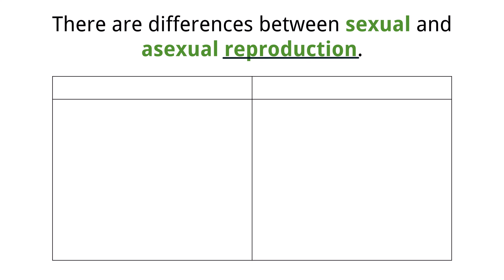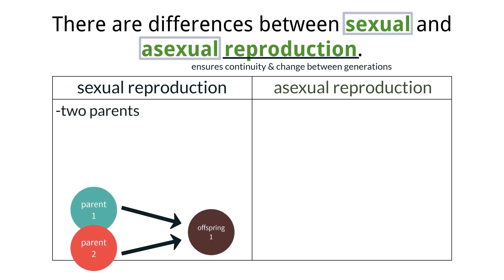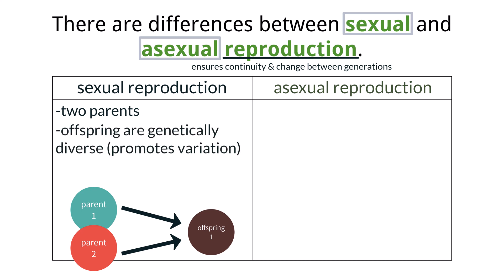Reproduction in living organisms ensures both continuity and change, with favorable characteristics being passed from generation to generation. This happens through sexual or asexual reproduction. Sexual reproduction requires two parents, with each contributing some of their genes to the offspring. This ensures that the offspring are genetically different from either of their parents. This advantage is important for organisms that live in environments that change over time, as promoting variation can result in new adaptations to the changed environment, allowing evolution via natural selection.